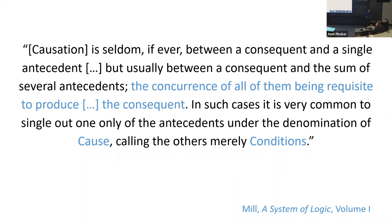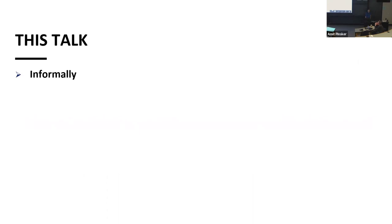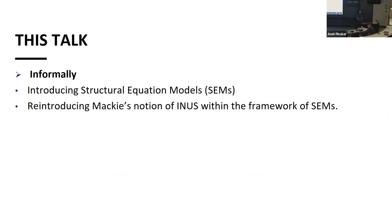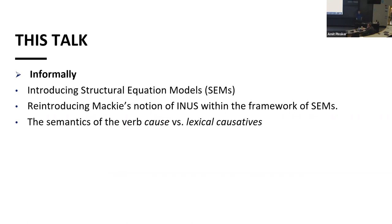Having said that, I will informally introduce the notion of structural equation models, then speak about Mackie's notion within that framework, and then speak about the semantics of the verb 'cause' versus the semantics of lexical causatives. So we will come back to the question we started with. And then I will do it a little bit more formally and introduce the notion of causal sufficiency — in fact, two notions of causal sufficiency.